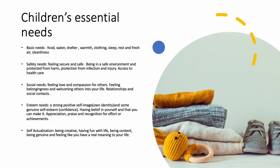First of all, let's look at what are children's essential needs. We have basic needs: food, water, shelter, clothing, sleep, rest, fresh air, and cleanliness. As we've discussed in previous tutorials, we also have safety — children have to feel safe and secure emotionally, and be in an environment that protects them from harm, infection, and injury. There are different routines in an early years setting that build that idea of safety.